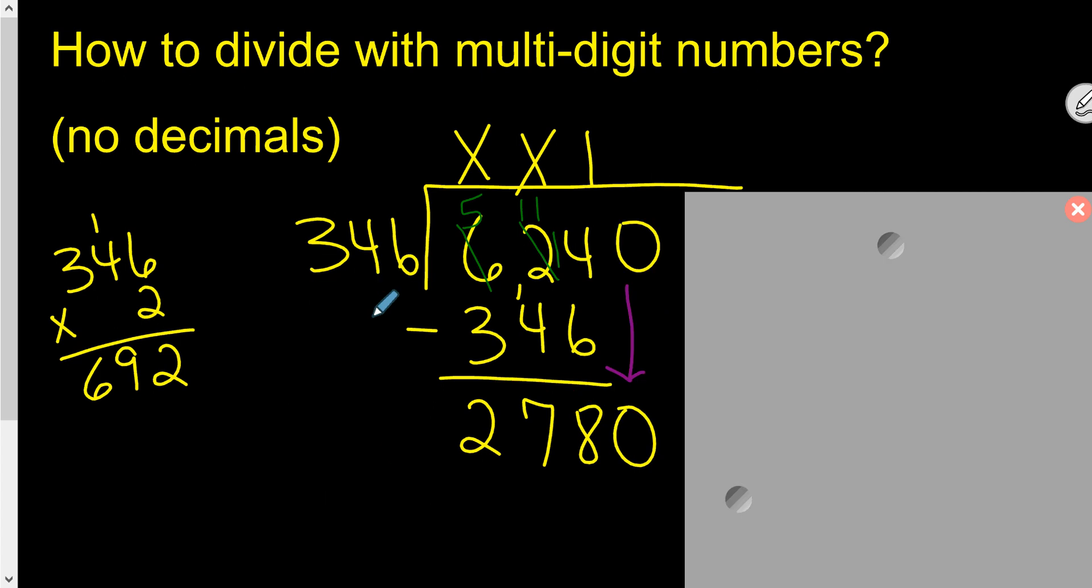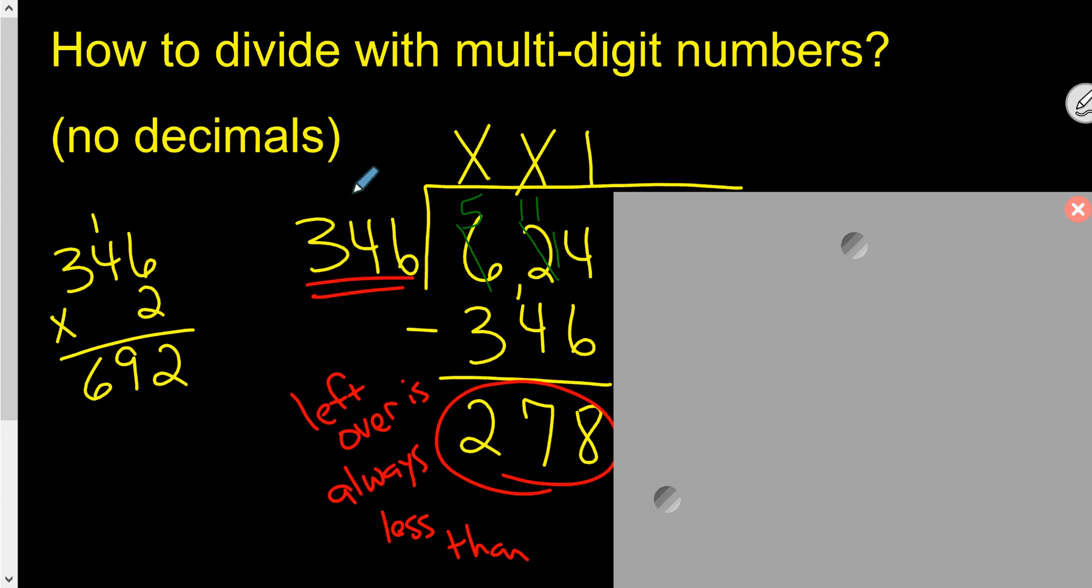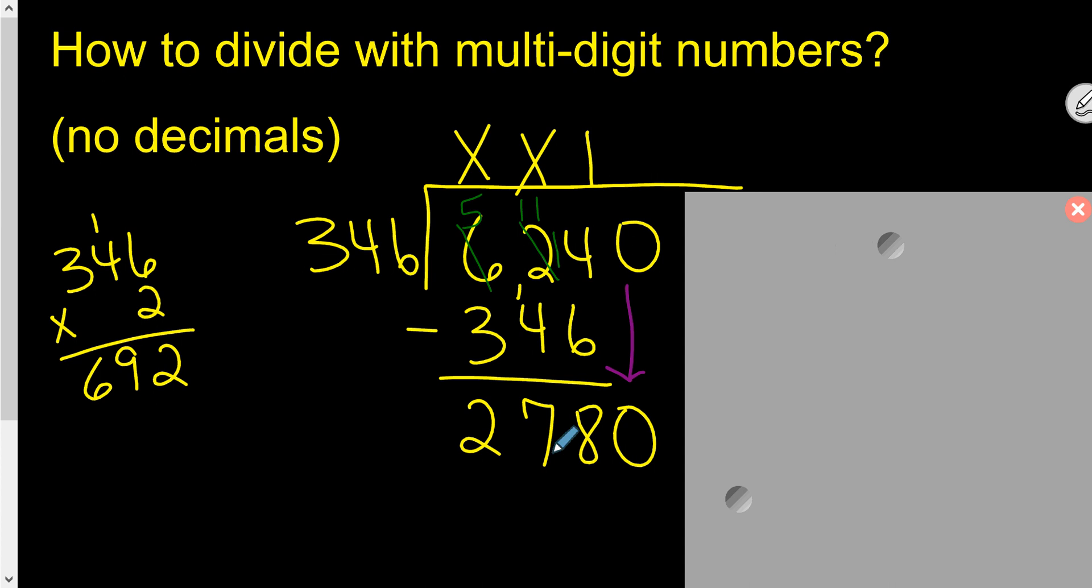Now, pull your paper a little bit off to the side, and then if you see another number, drop that down. Just one. And we don't do this check now. We don't care that 2780 is bigger than 346. No, we care about it as far as what's left over before we drop down that next number.